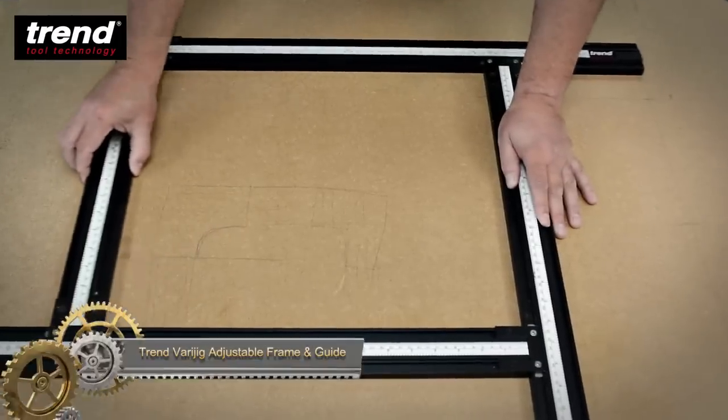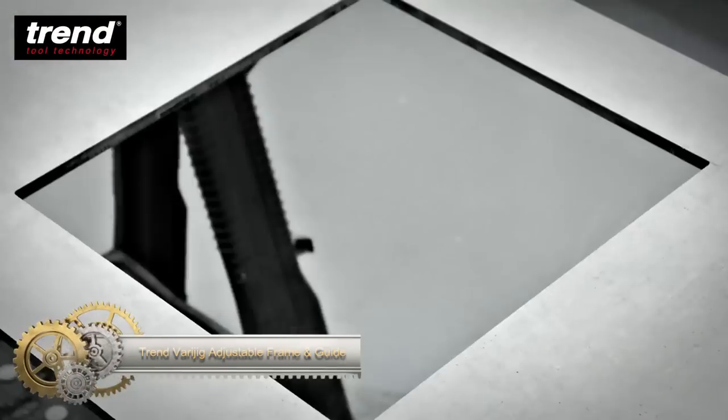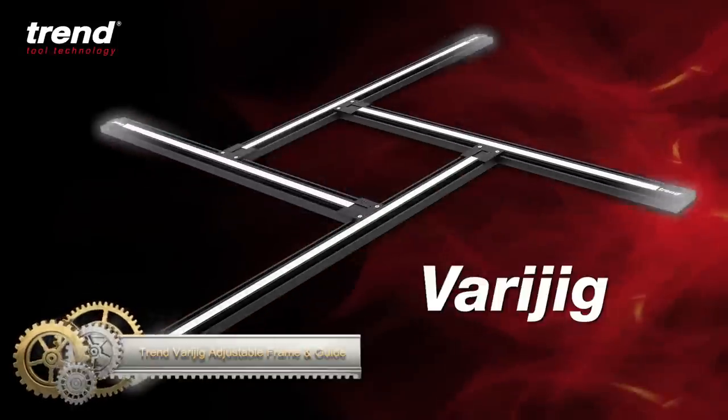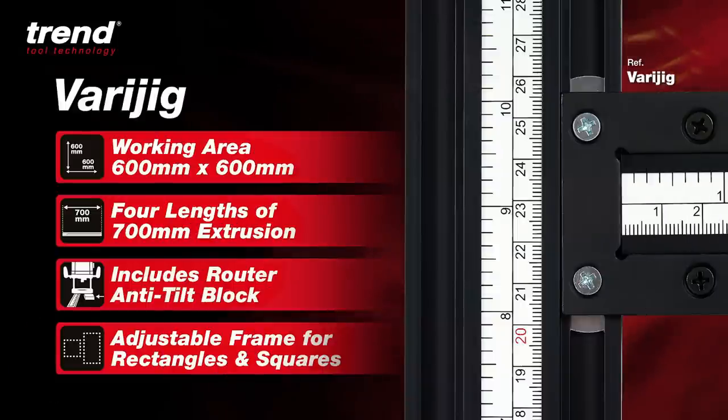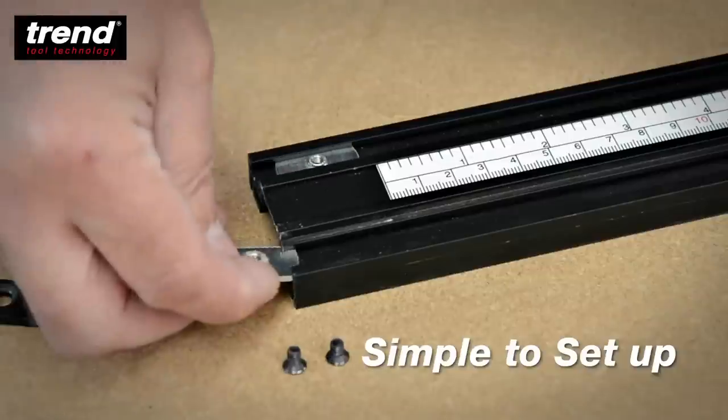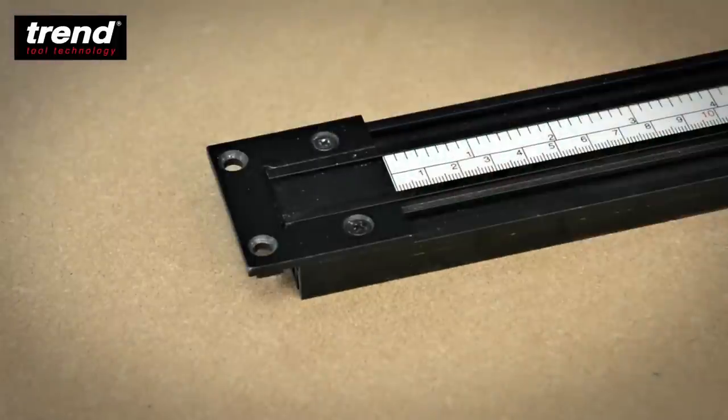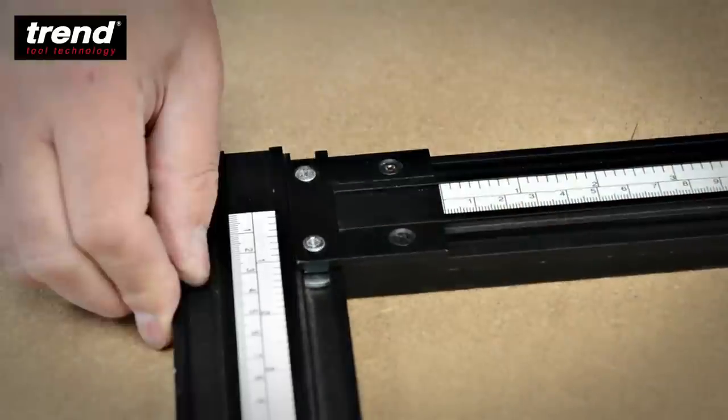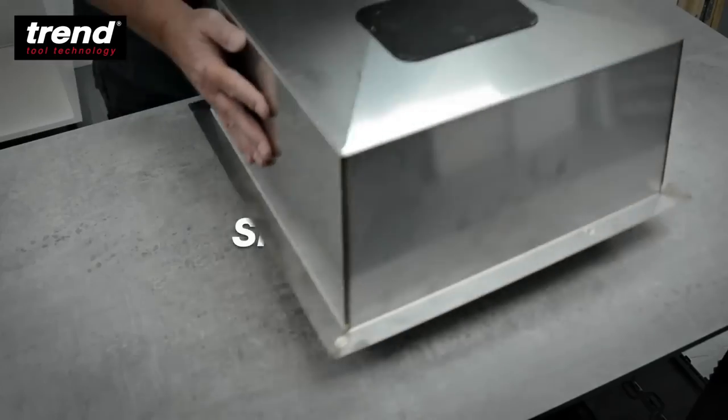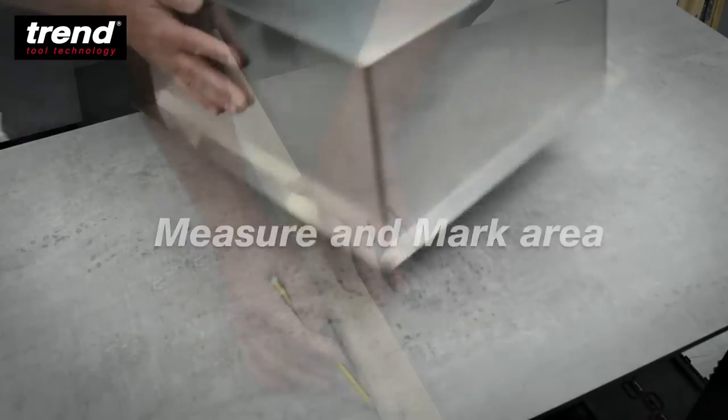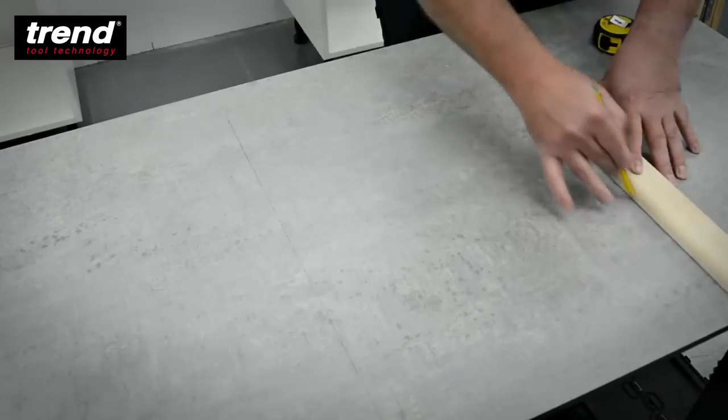The Trend Verijig Adjustable Frame Guide is a multi-purpose tool for routers, enabling precise cuts like recesses and face panel moldings. Constructed from anodized aluminum, it offers durability and precision. The adaptable guide fits various router bit sizes and is simple to clamp to any workspace. Its high level of accuracy and versatility make it suitable for both novices and seasoned users.